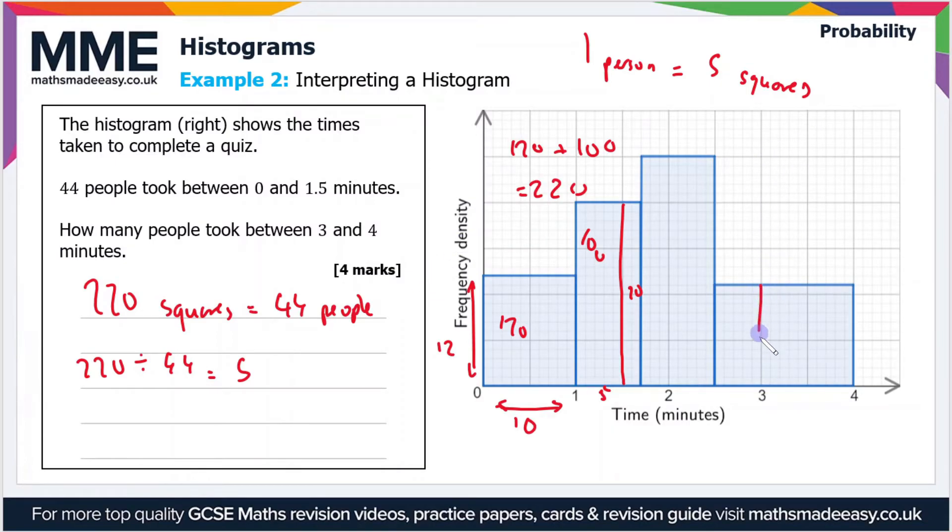So between three and four minutes is from here to here. That's 10 squares across and it's 11 squares tall. So that's 110 squares in total which is just 10 times 11.